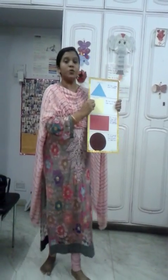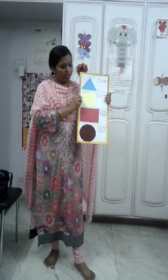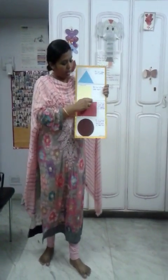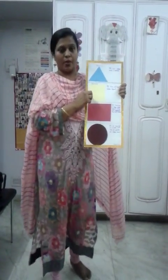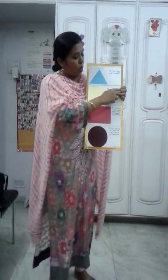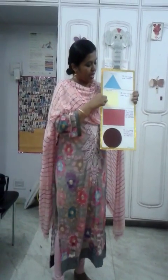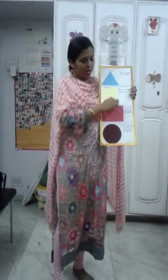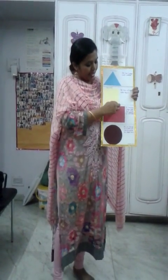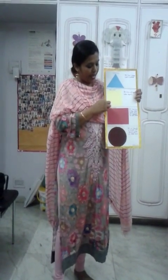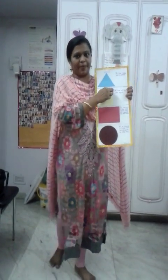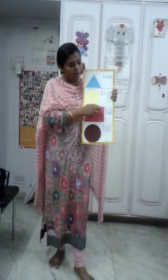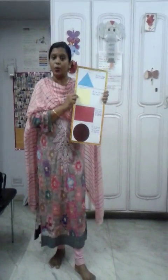Now we move to the square. The color of my square is yellow. It has all four sides equal — a standing line, sleeping line, standing line, again a sleeping line. But all the sides are equal.